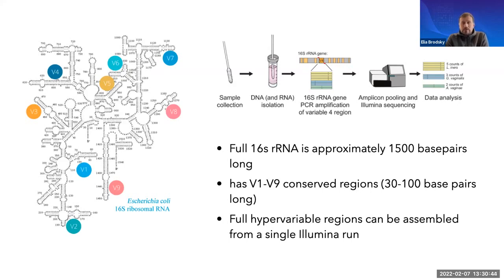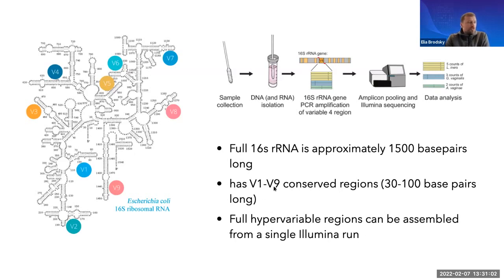Full hypervariable regions can be assembled from a single Illumina run, making them ideal targets for the platform. Here you can see the 16S ribosomal RNA is about 1,500 base pairs long with V1 to V9 conserved regions, and choosing one or a couple of them makes it a good candidate for these kinds of studies.